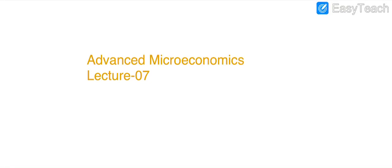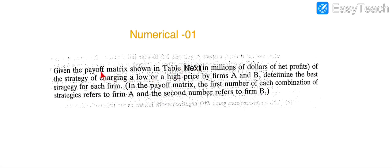Bismillahirrahmanirrahim. Advanced Microeconomics, Lecture 7. Today we are going to start a numerical on non-zero-sum games. The payoff matrix is showing the strategies followed by Firm A and Firm B.